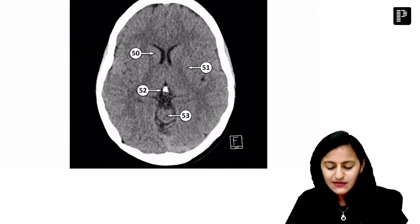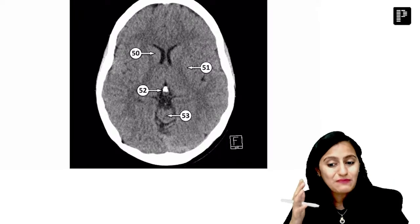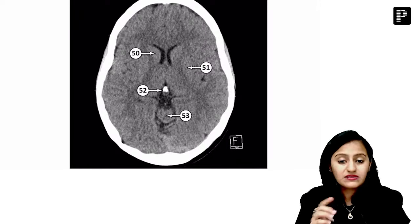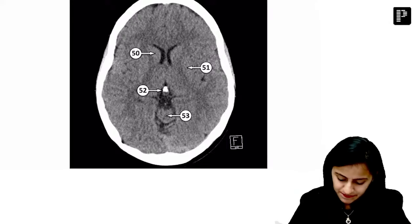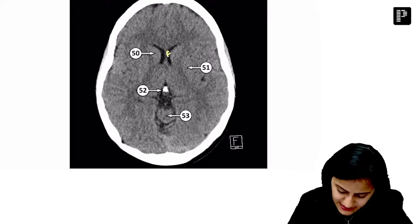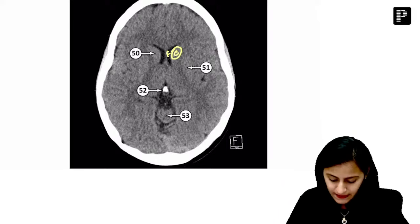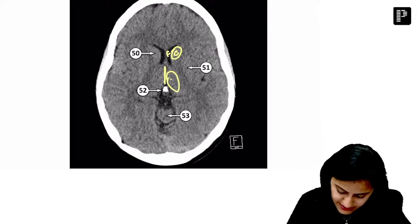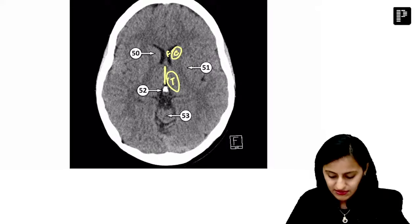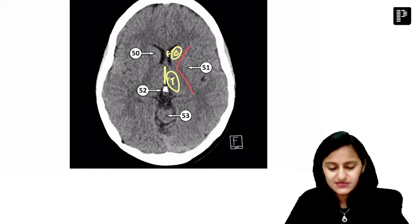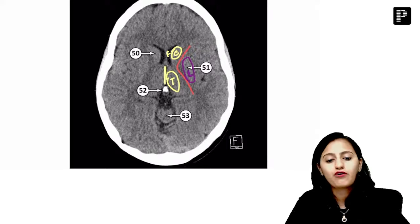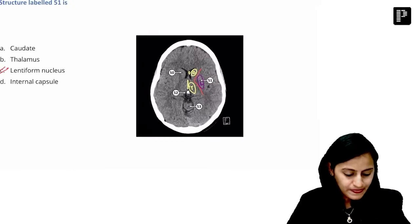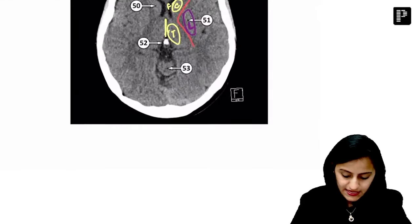The answer here is lentiform nucleus. It is not the internal capsule. Remember internal capsule is a white matter, it's going to be dark on CT. The lentiform basal ganglia is going to be more dense and appear more white on CT. So this one, this is the frontal horn, adjacent to that is the caudate here, right? It opens in the third ventricle and adjacent to third ventricle is the thalamus. Adjacent to both of them this is the internal capsule, and lateral to the internal capsule this number 51 is the lentiform nucleus.